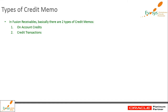Basically, there can be two types of credit memo. Credit memos which are not against any specific invoice transaction, but against a customer as a whole, are called on-account credits in Oracle Fusion terminology.